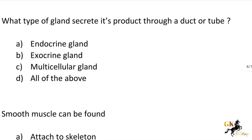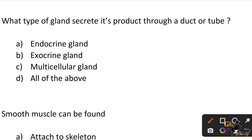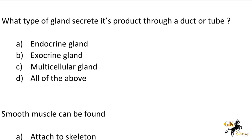Next question: What type of gland secretes its product through a duct or tube? Option A: Endocrine gland. Option B: Exocrine gland. Option C: Multicellular gland. Option D: All of the above. The correct answer is Option B: Exocrine gland.